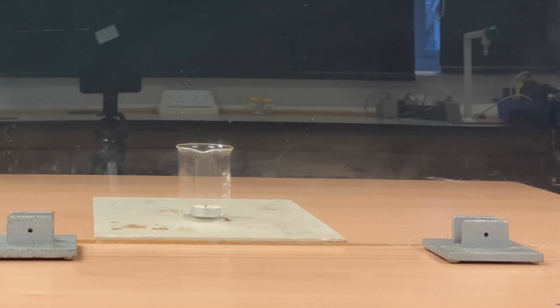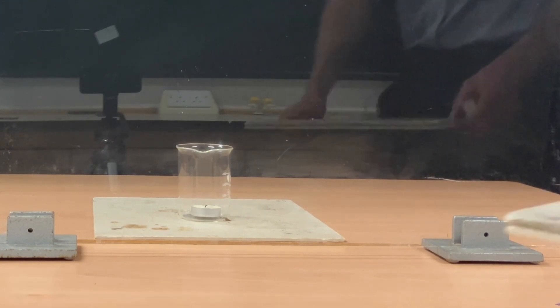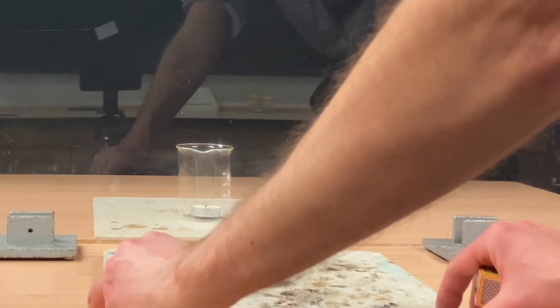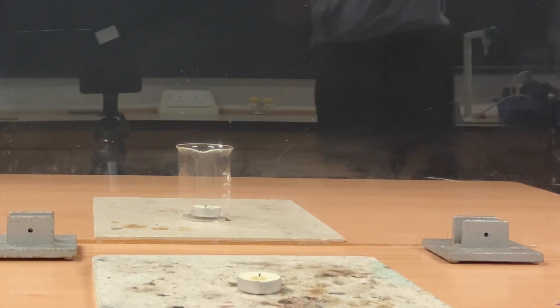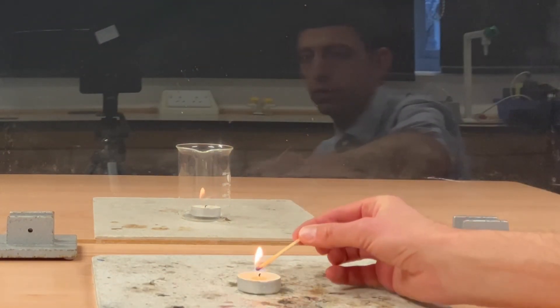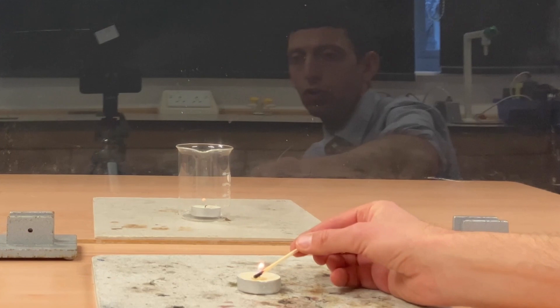Then in front of that you're going to want to have a second heatproof mat and on top of that heatproof mat you're going to have the second tea light which you're then going to light with a match.